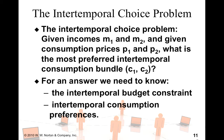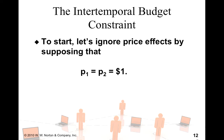Everything we learned about future value and present value in the first lecture will be used to figure out the intertemporal budget constraint. To start, let's ignore price effects and say that P1 equals P2 equals $1, so we just think about the cost of the bundle at $1. We can consider prices later.